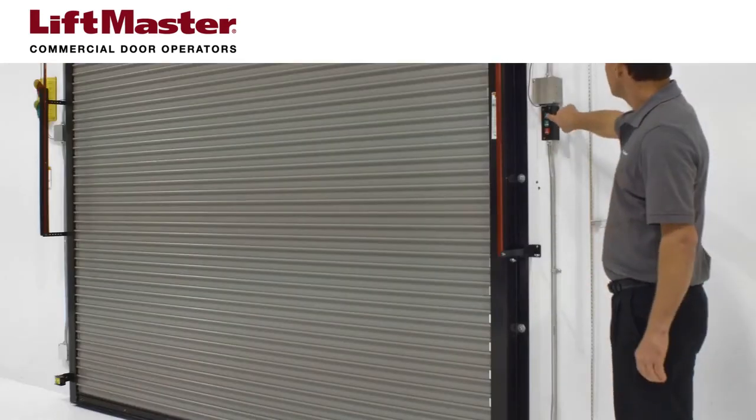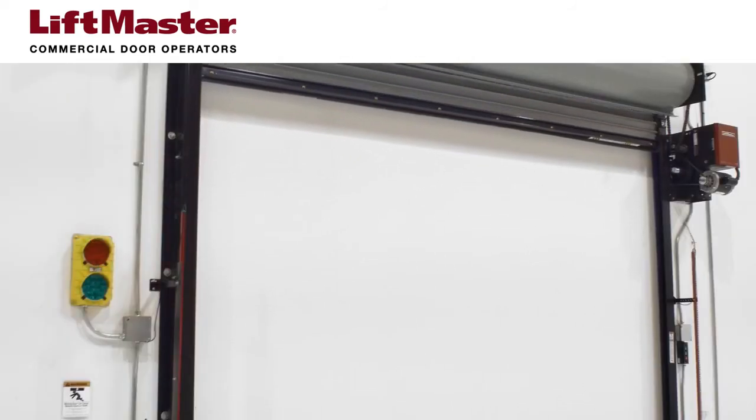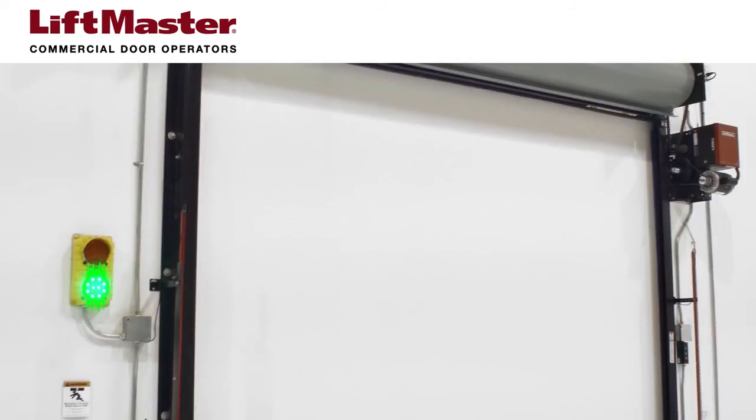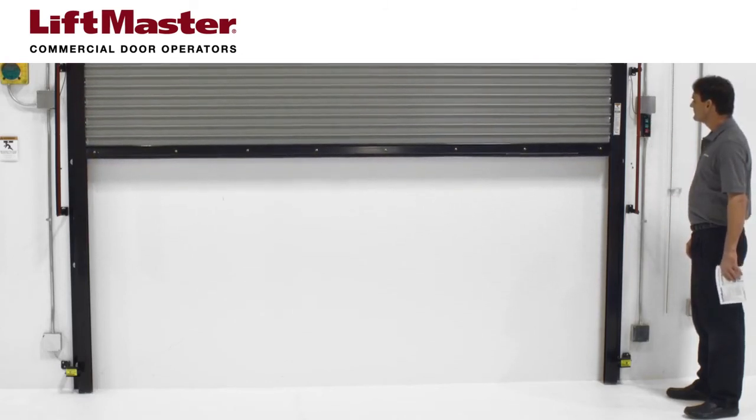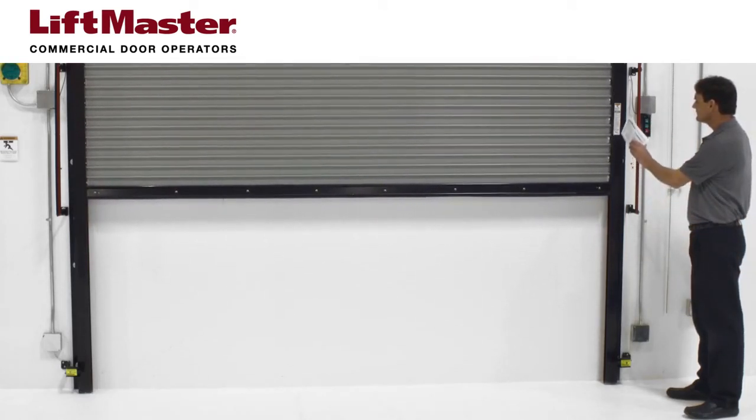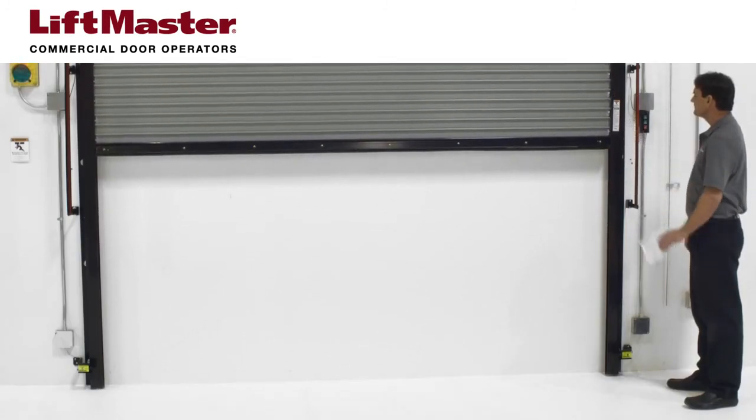When the light curtains are properly aligned, it's time to test. Open the door to the full open position. Press the close button. While the door is closing, obstruct any of the invisible light beams on the light curtain. The green LED on the light curtain receiver will blink when the invisible light beam is obstructed. The door should stop and reverse.